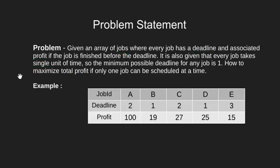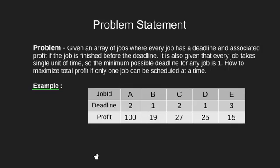Let's take an example to make this problem statement more clear. Here we have 5 jobs with job IDs A through E. Job A has to be done before 2 units of time, and if it is done the profit made would be 100 units. Since each job takes only 1 second, we can schedule A from 0 to 1 second or from 1 to 2 seconds. Similarly, we have to arrange all jobs to maximize our profit.